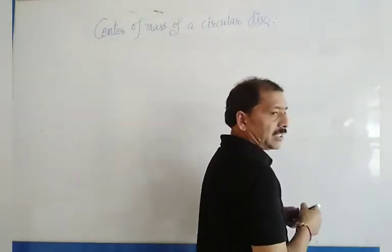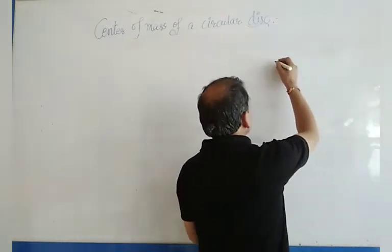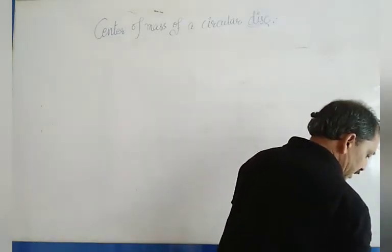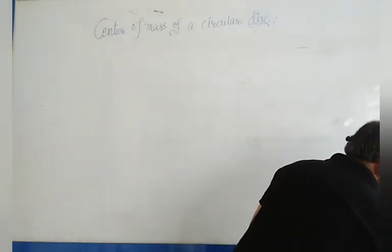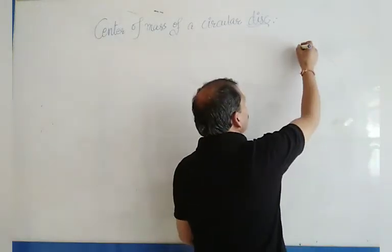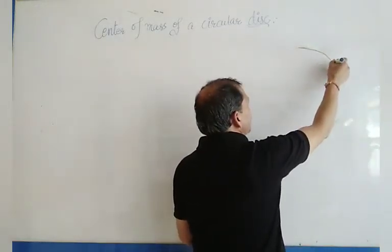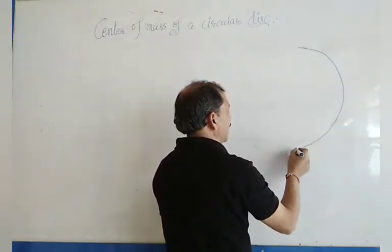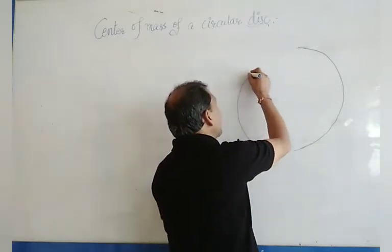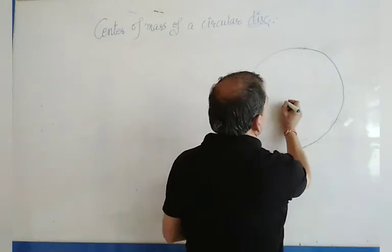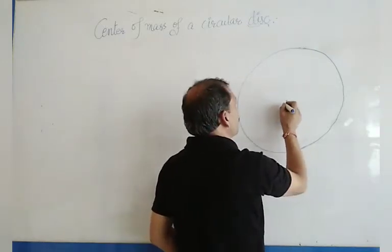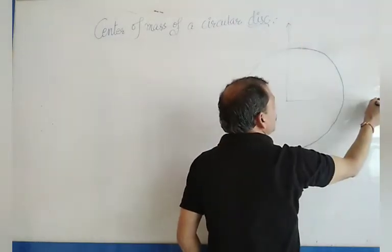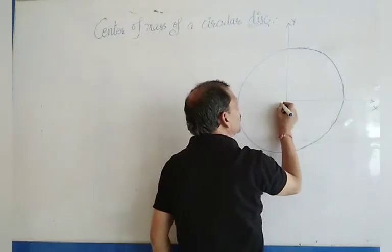We suppose that a circular disk is placed such that its geometric center is at the origin, meaning it is at (0, 0). If this is the x-axis and this is the y-axis, then the geometric center is at (0, 0).